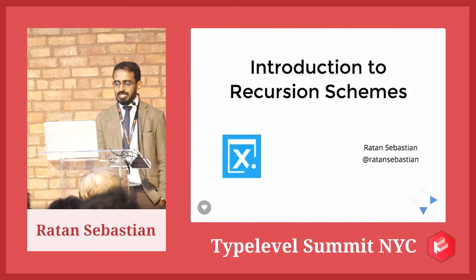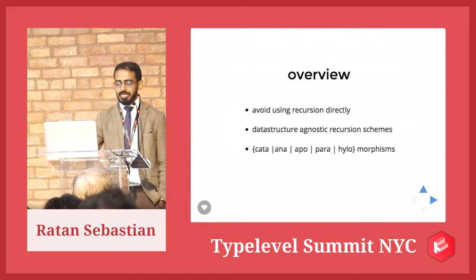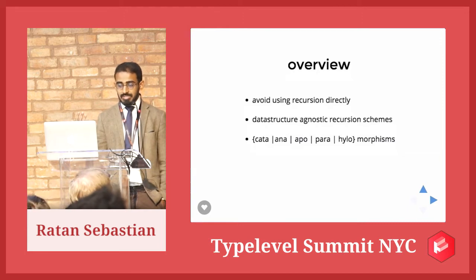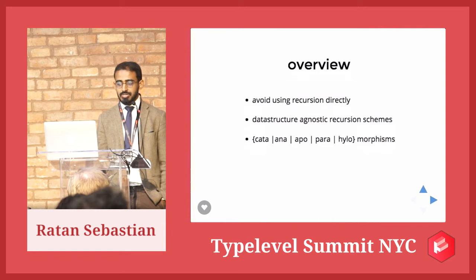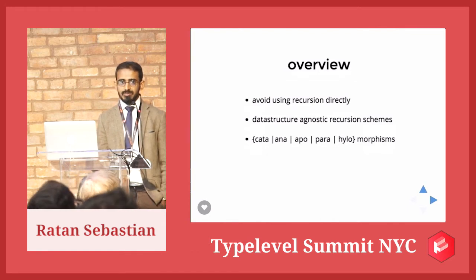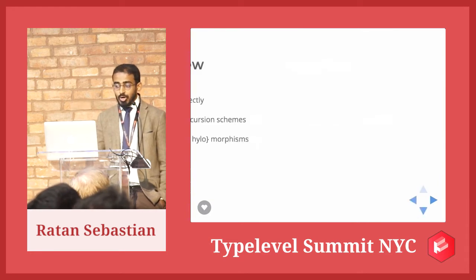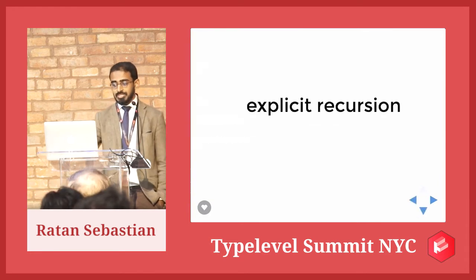What we're going to be talking about today is how we use recursion in our programs, why we shouldn't, and what we can use instead. I'm going to make an argument against using recursion directly to traverse a data structure and introduce recursion schemes as an alternative. I'll define these recursion schemes independent of a specific data structure, and finally end with an overview of recursion schemes like Cata, Ana, Apo, and Para — showing how they are useful and how they relate to each other.